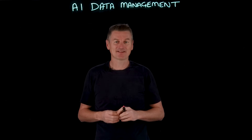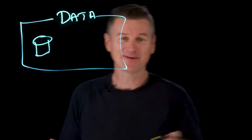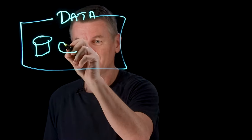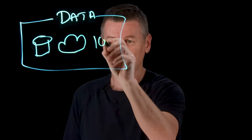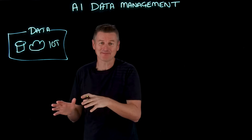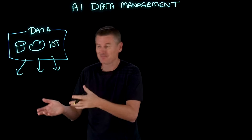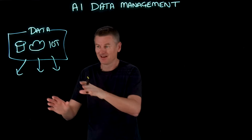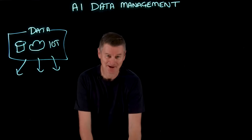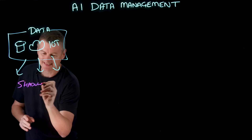Starting with data discovery. Businesses receive data from all sorts of places — that could be internal databases, cloud services, or IoT sensors, just to name a few. And this data often ends up distributed in silos, across different departments, different cloud accounts, or different local machines, often with no central visibility. There's a term for this: shadow data.